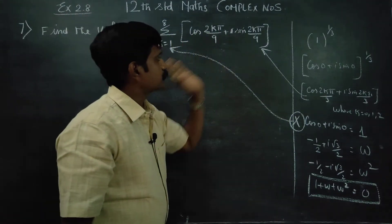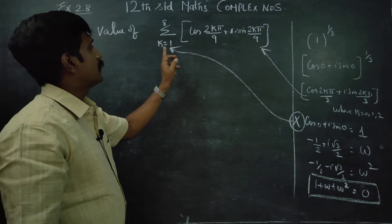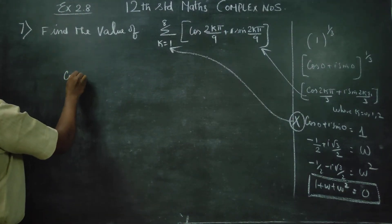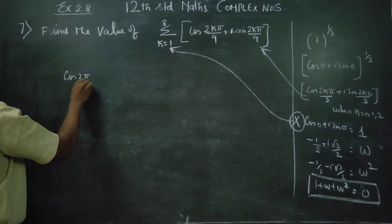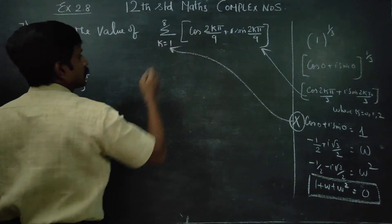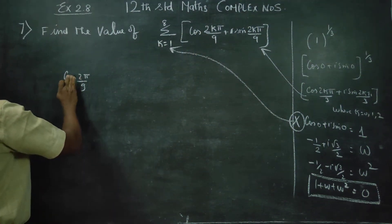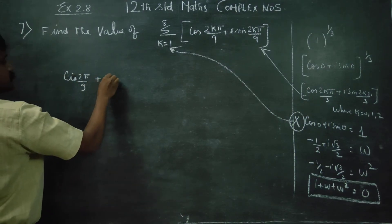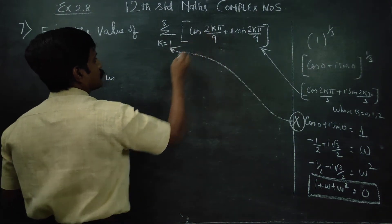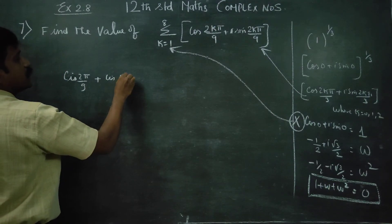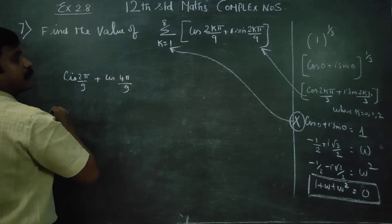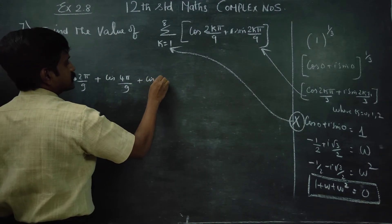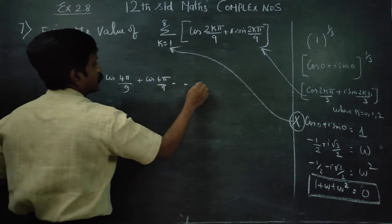Now for the 9th root of unity: k is equal to 1 gives cos(2π/9) plus i sin(2π/9). k equal to 2 gives cos(4π/9) plus i sin(4π/9). k equal to 3 gives cos(6π/9), and so on, dot dot dot.